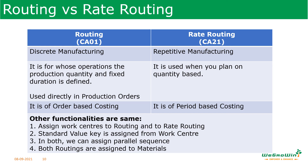Standard routings are used for order-based costing, while rate routings are used for period-based costing. The remaining functions are common — in both cases you assign the work center, assign the standard value key, can define parallel sequences, and assign materials. The main difference is that standard routing is for discrete manufacturing and rate routing for repetitive manufacturing. When you practice both, you will be able to appreciate this difference clearly.